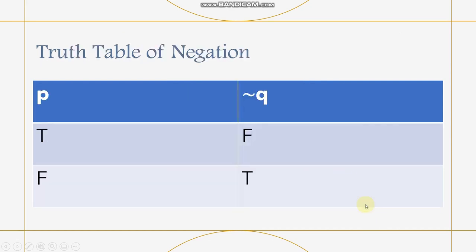Now, we have different truth tables. First is the truth table of negation. When P is true, its negation Q is false. And when P is false, its negation Q becomes true.